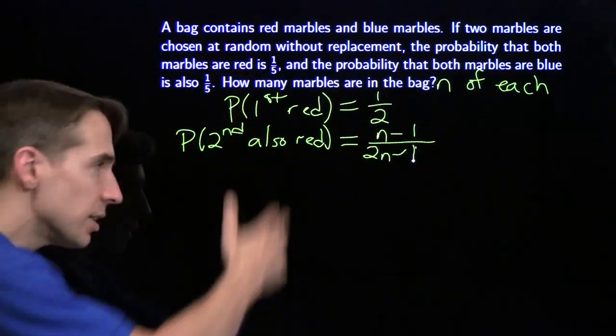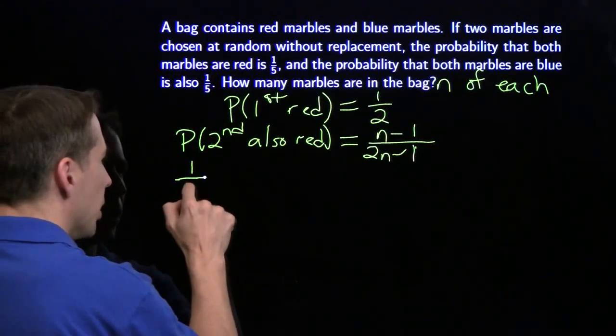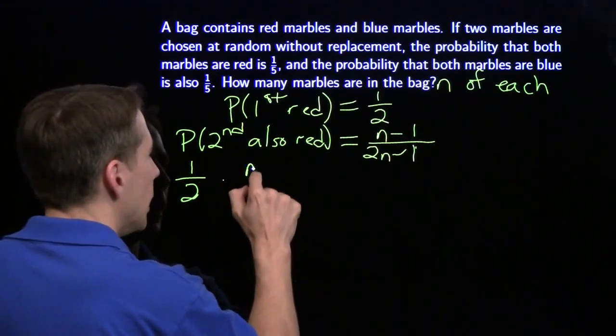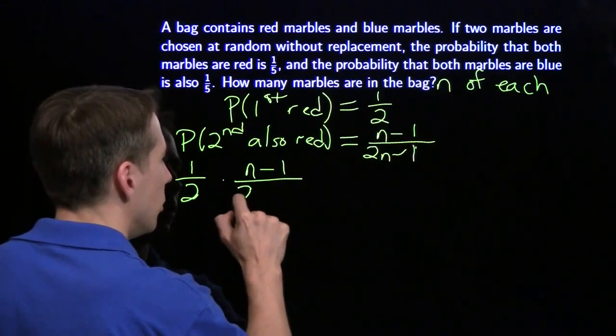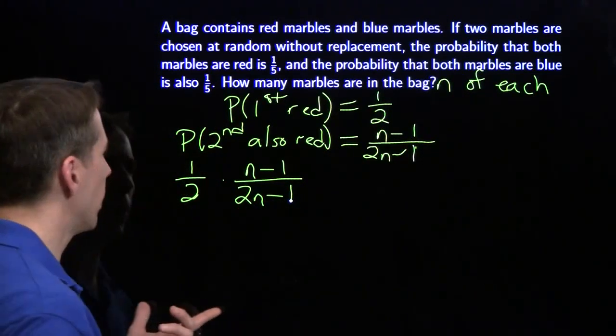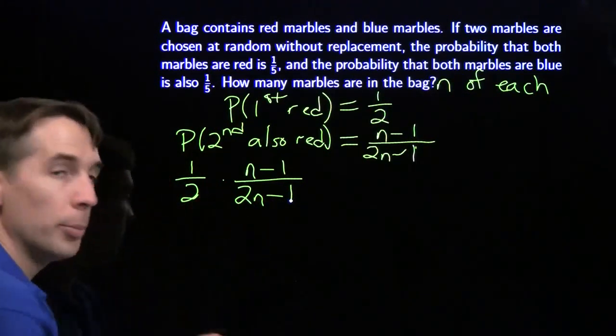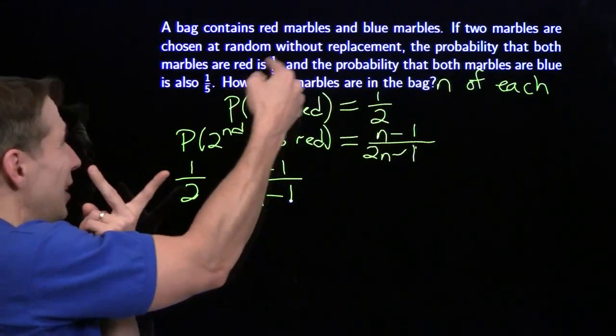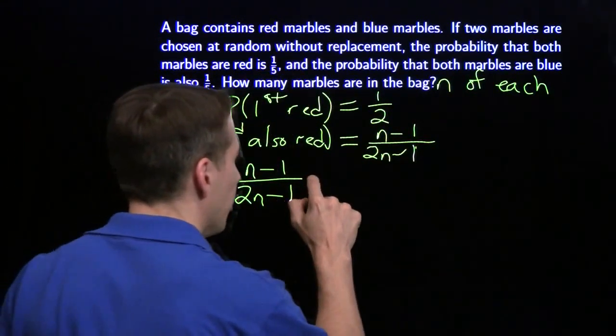In order to get two reds, I need both of these things to happen. Half the time, I'm going to get the first one as red, and then of that half the time, n minus 1 over 2n minus 1 at a time, I'm going to get the second one as also red. So there's my overall probability of getting two reds, and we're told that that equals one-fifth. So now I have my equation.